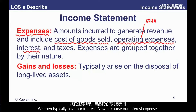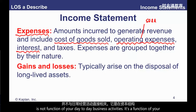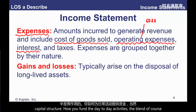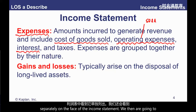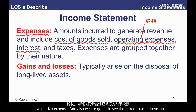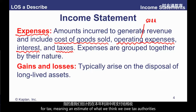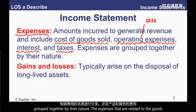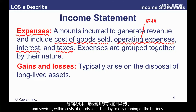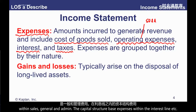These operating expenses are all costs incurred to run our primary day-to-day business activities, but not directly related to producing goods and services. We then typically have interest expense, which is not a function of day-to-day business activities but of your capital structure — the blend of debt and equity — so we'd like to see that separately on the face of the income statement. We also have tax expense, often referred to as a provision for tax — an estimate of what we owe the tax authorities on this year's profits.